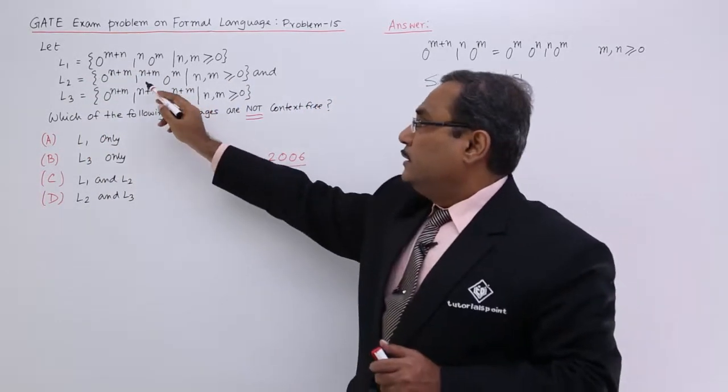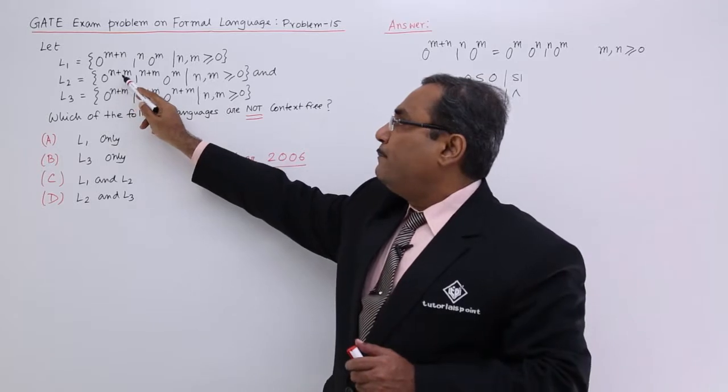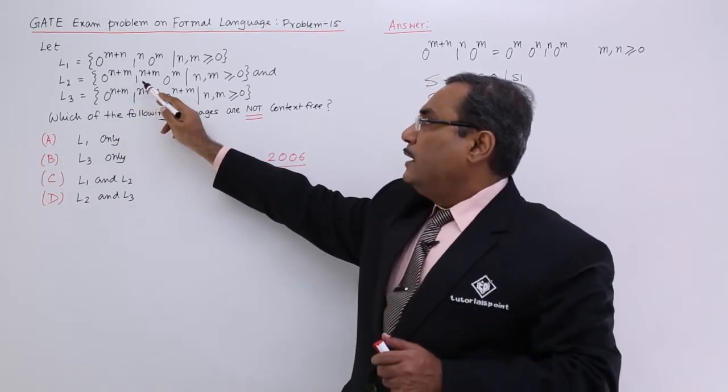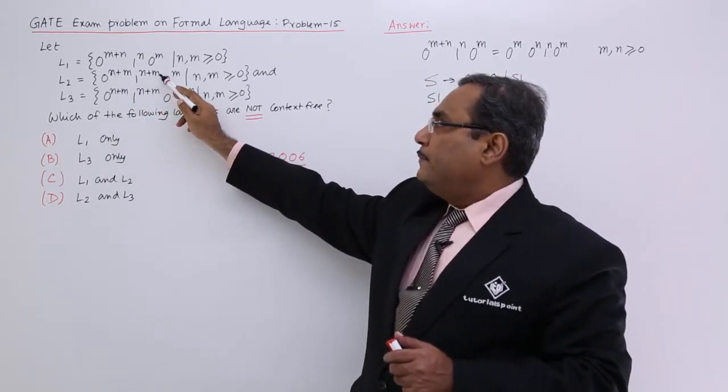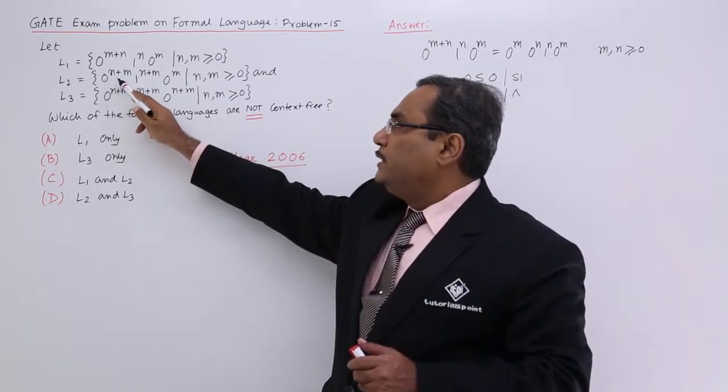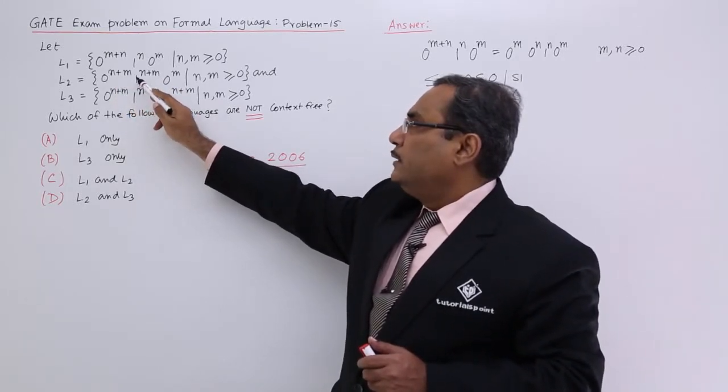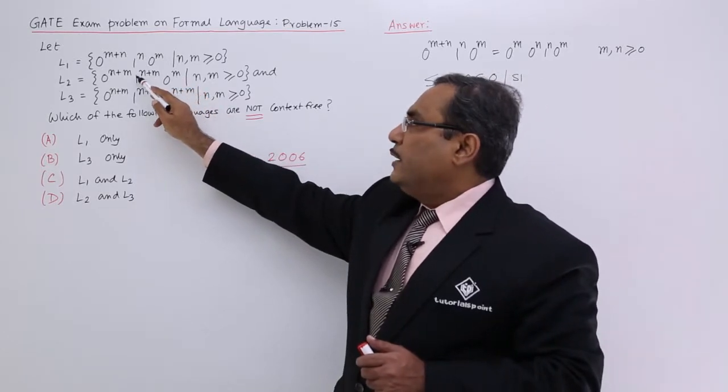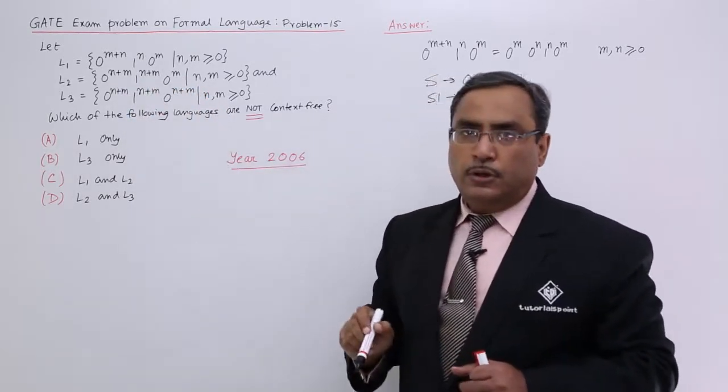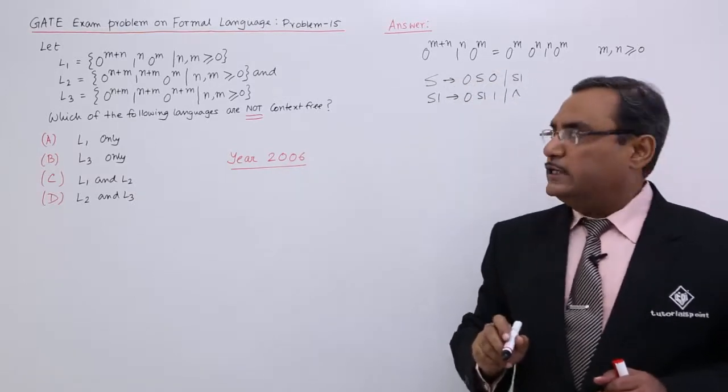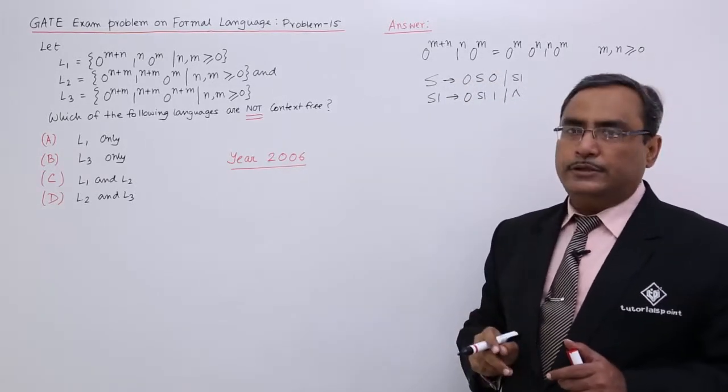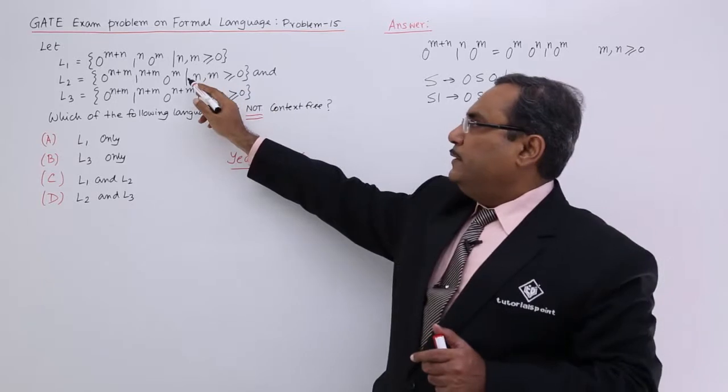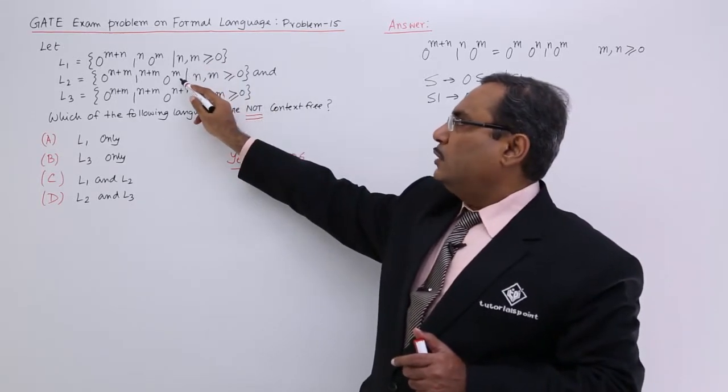But if you consider this one that is 0 to the power m plus n plus m and 0 to the power n plus m. So that means 0s will be there, 1 will be there and this m will be equal to this and equal number of 1s and 0s for n number of. So you cannot suggest any context free grammar for that particular language. So it is not context free.